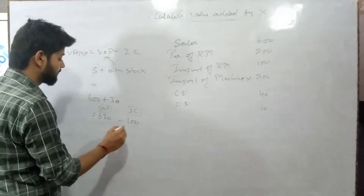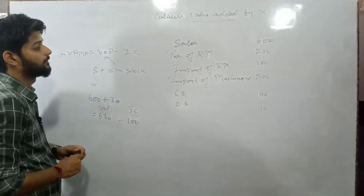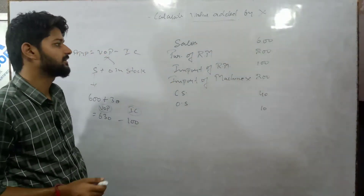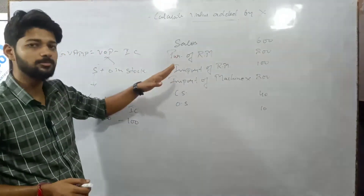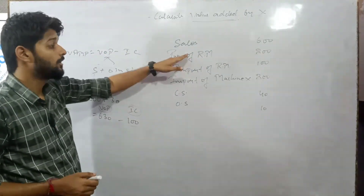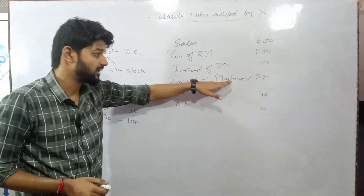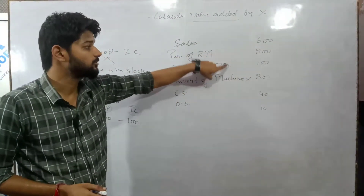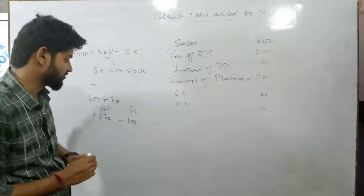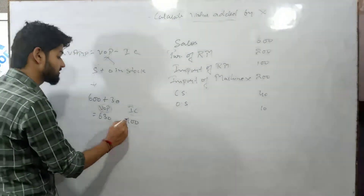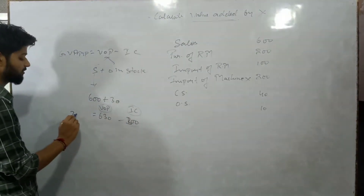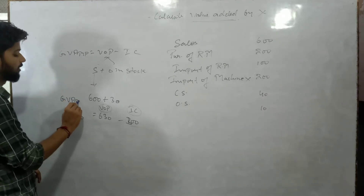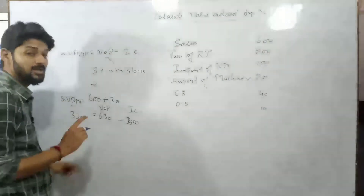There are three items under Intermediate Consumption: purchase of raw material, import of raw material, and import of machinery — but machinery is a final product, so it is not included. The relevant intermediate consumption items total 200 plus 100, giving 300. So GVA at MP for Firm X is 610 minus 300, giving 310 lakh.